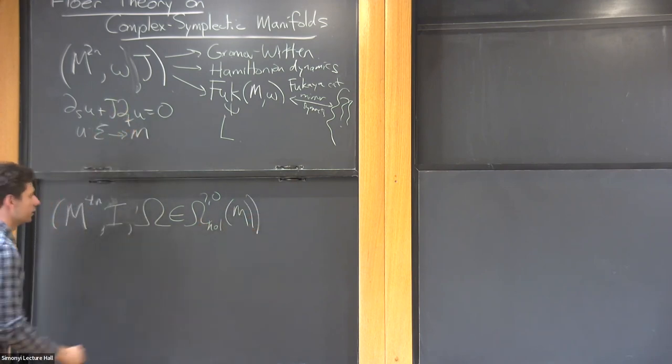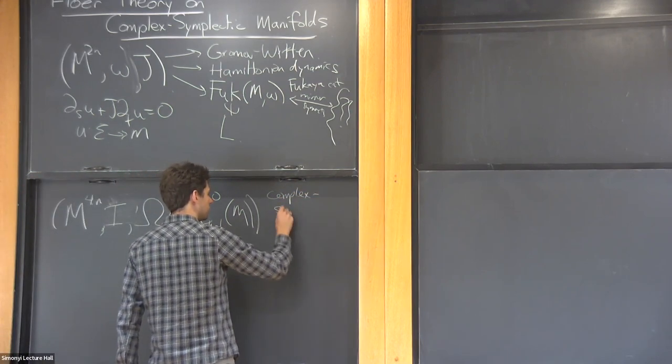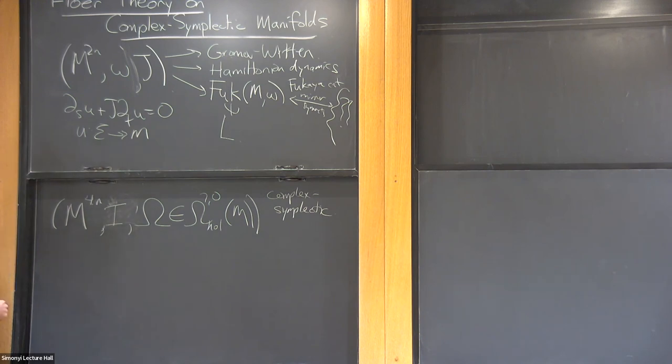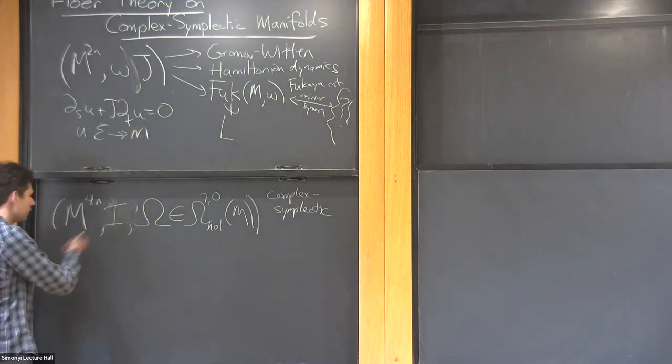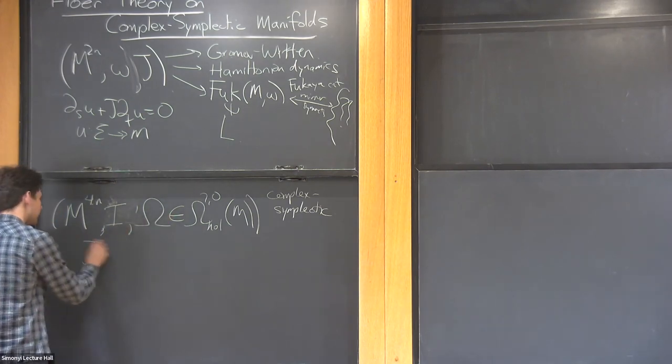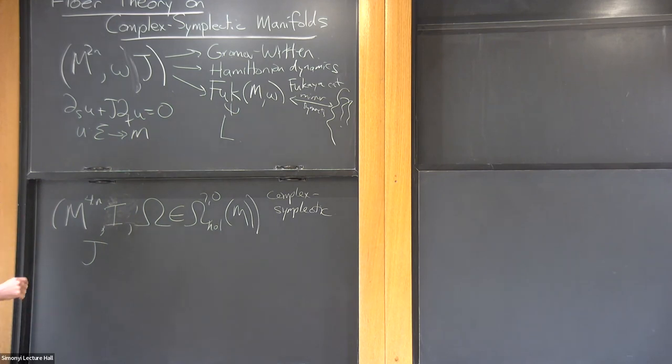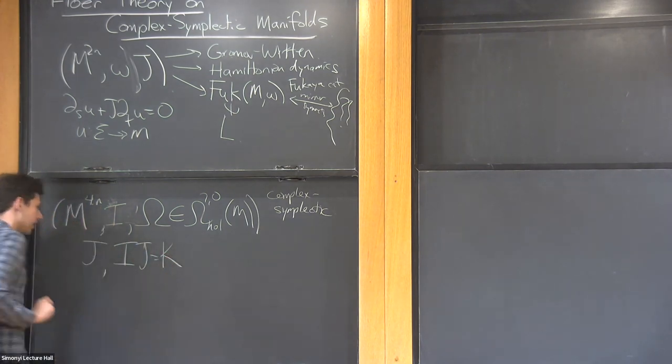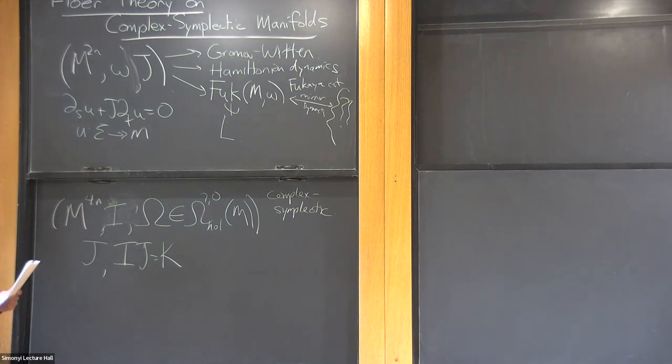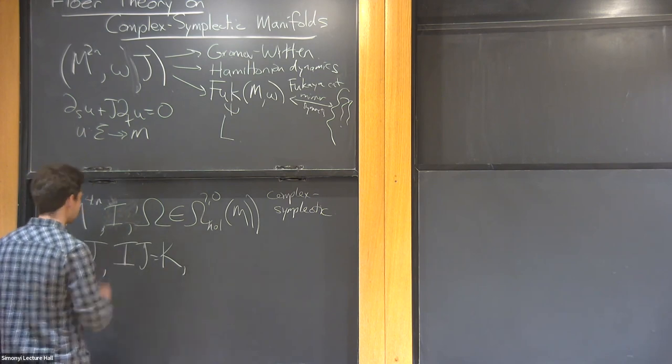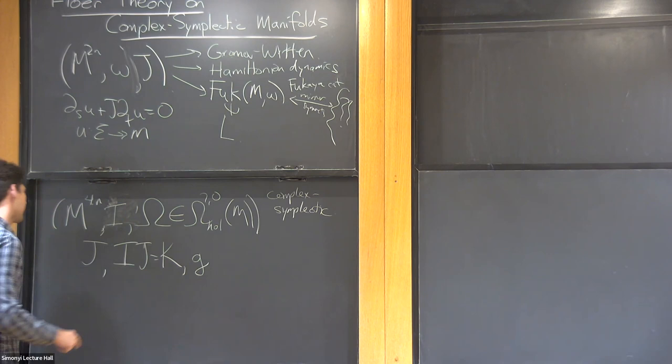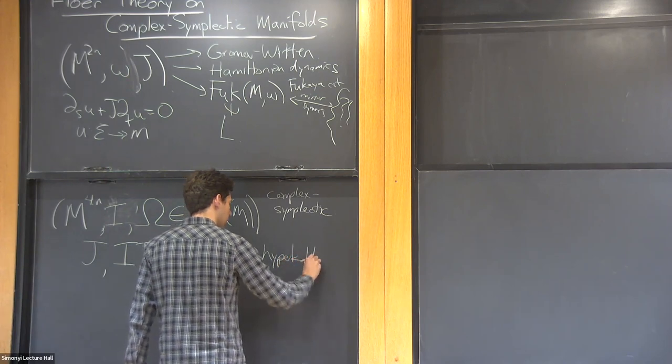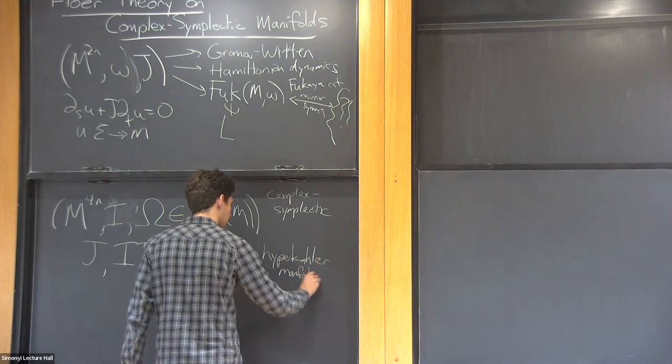This is a complex symplectic manifold. Just like a symplectic manifold, you can't really define any invariants without choosing some kind of metric data. There's one famous way of enhancing this to a metric: you want to pick a J as we did before, so that's another complex structure, and once you have two of these, it's natural to define IJ equals K and ask for I and J to anti-commute, in which case you have a quaternionic triple of complex structures. It's also natural to ask for a metric for which the connection preserves all of these, in which case you have a hyperkähler manifold.